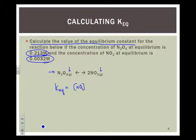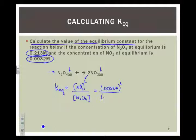Products will go on the top, squared because of that coefficient of 2, divided by my reactant. And now, I can just put in the numbers that I was given. The concentration of NO2 was 0.0032 molar squared, divided by the concentration of my N2O4. And I forgot to bring my calculator, so you can put it into your calculator and you can tell me.